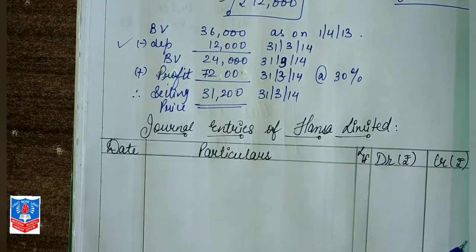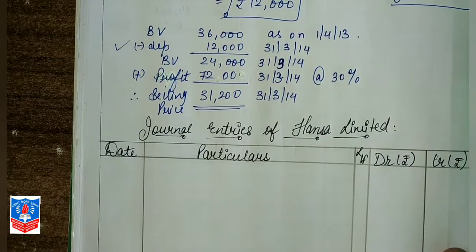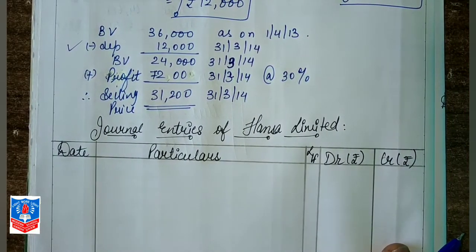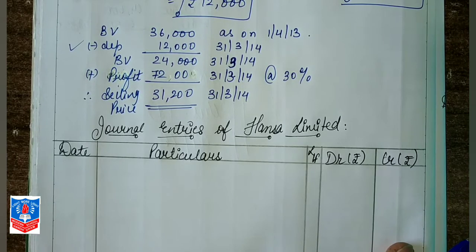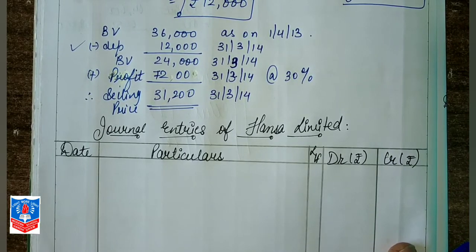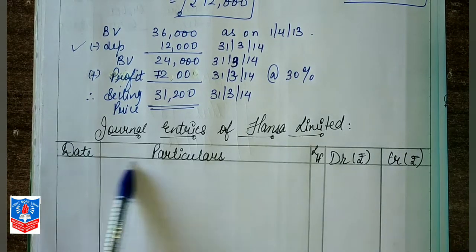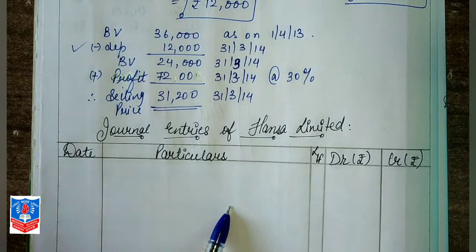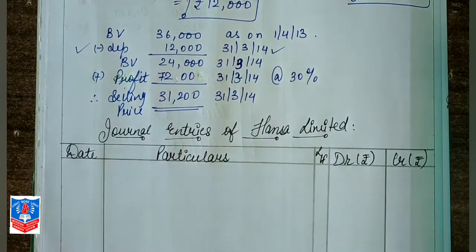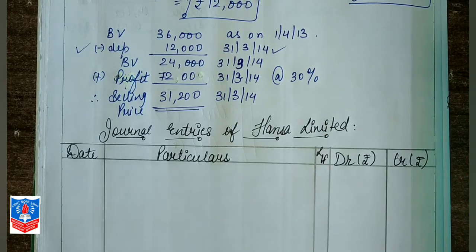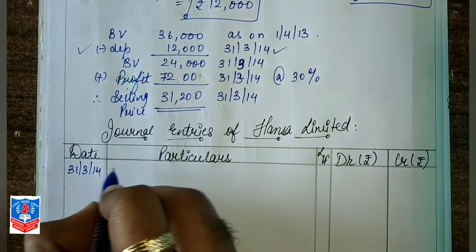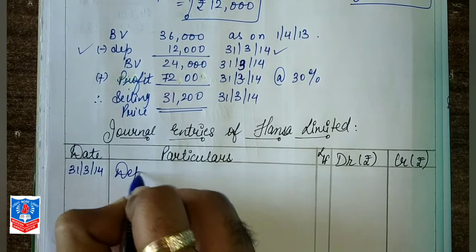Now let us write the journal entries for Hansa Limited. Since there is no purchase information given in this question — unlike Question 1 — we will not write a machine-to-bank journal entry. We directly start with the depreciation entry on 31/3/14.